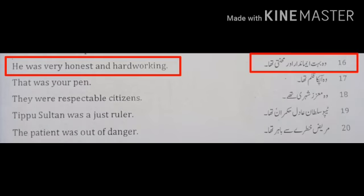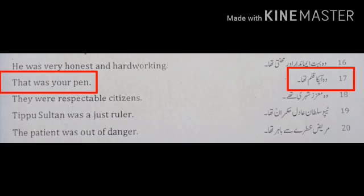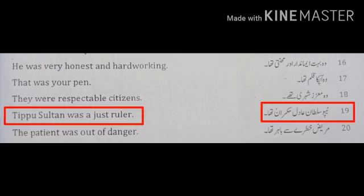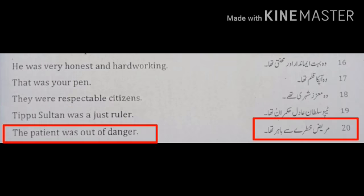Number 16: Wo bahut imaandar aur mehnati tha. — He was very honest and hardworking. Number 17: Wo aap ka qalam tha. — That was your pen. Number 18: Wo mozziz shehri the. — They were respectable citizens. Number 19: Tippu Sultan aadil hukumran tha. — Tippu Sultan was a just ruler. Number 20: Mareez khatre se bahar tha. — The patient was out of danger.